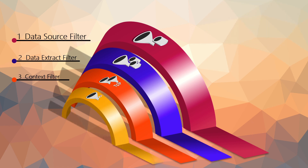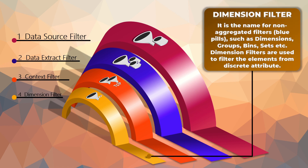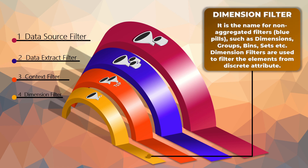The next filter is named the dimension filter. This filter helps to eliminate non-aggregated values from the view. As the name suggests, this filter is applied only on those attributes that come under dimensions in Tableau and are discrete in nature.